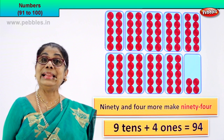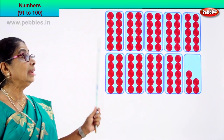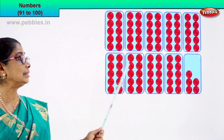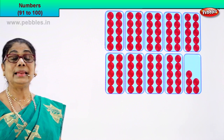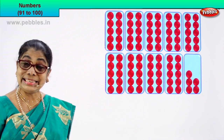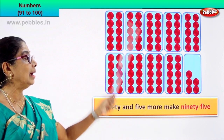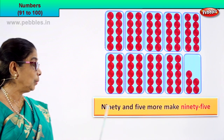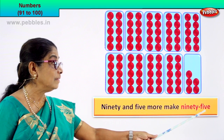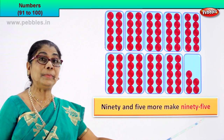Shall we take the next numeral? Count the next boxes and enjoy. Look — how many boxes are there? One, two, three, four, five, six, seven, eight, nine. Nine boxes of ten, that is 90. And how many more? 1, 2, 3, 4, 5. So 90 and five more make 95. The number name is 95.